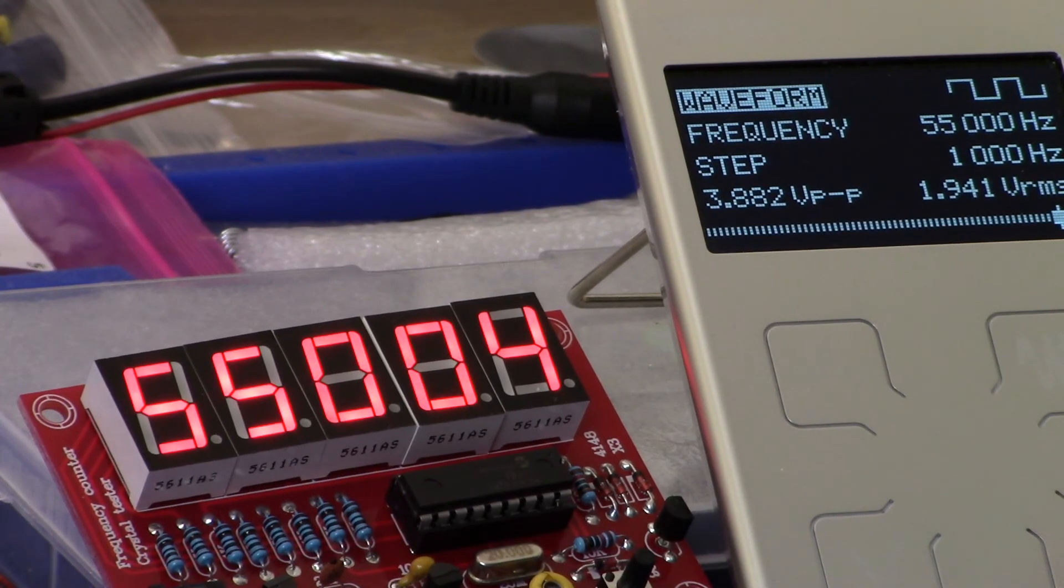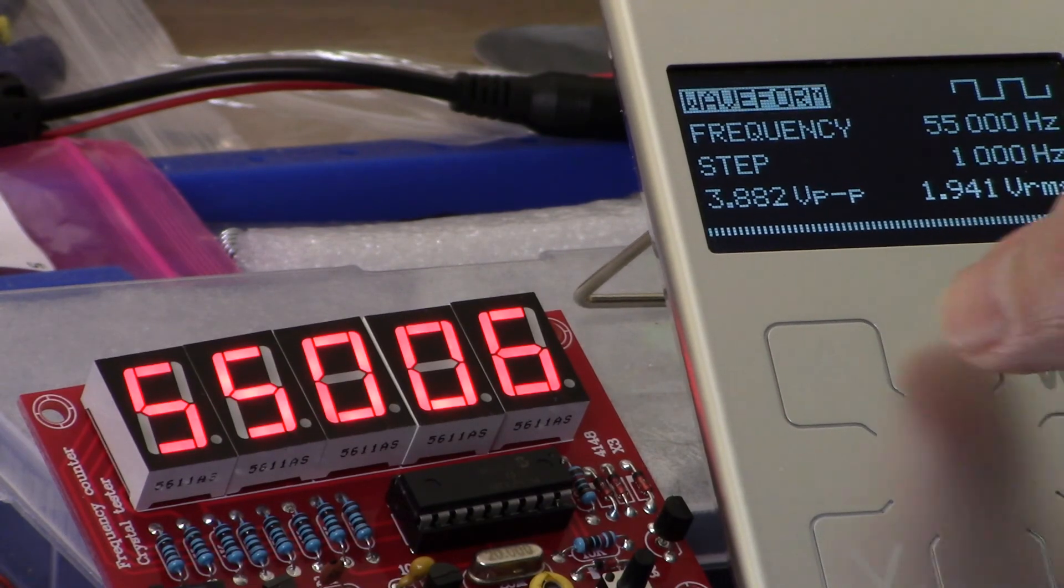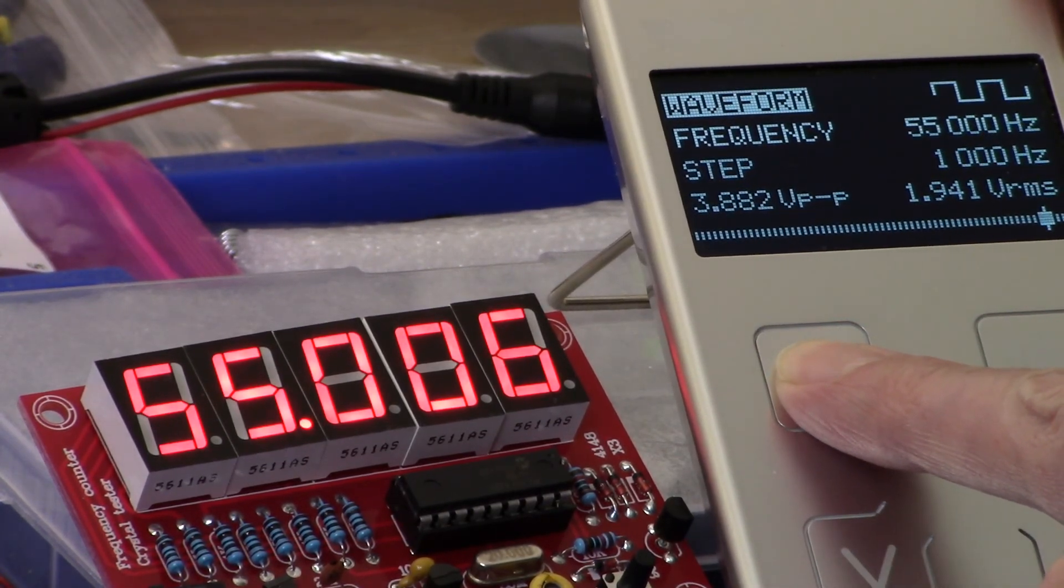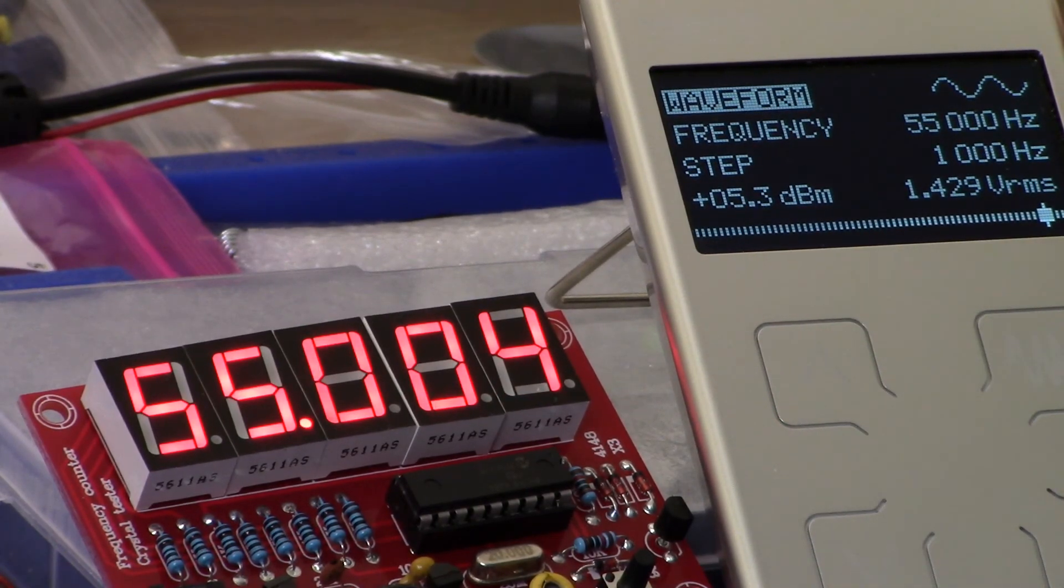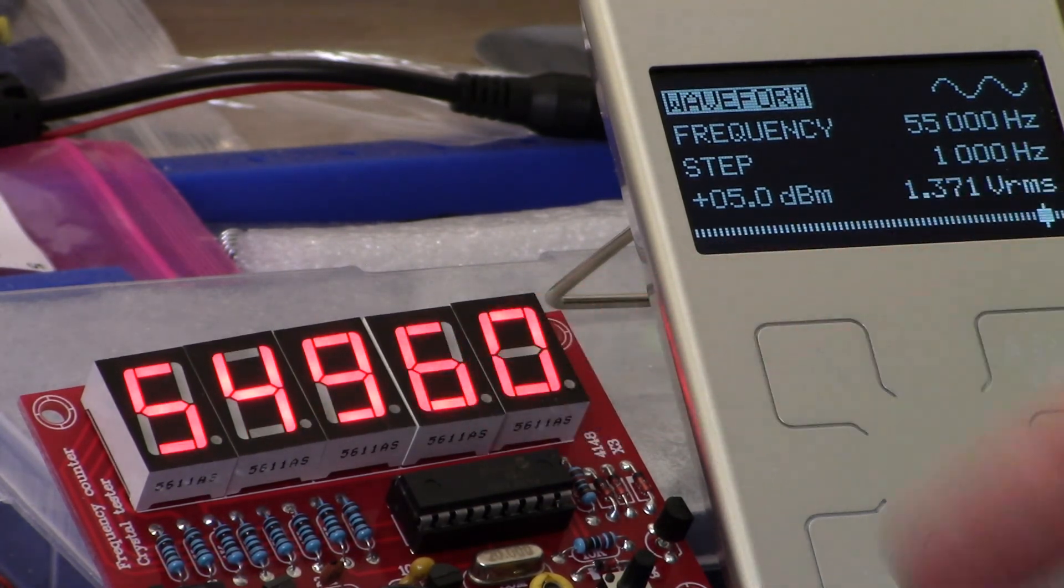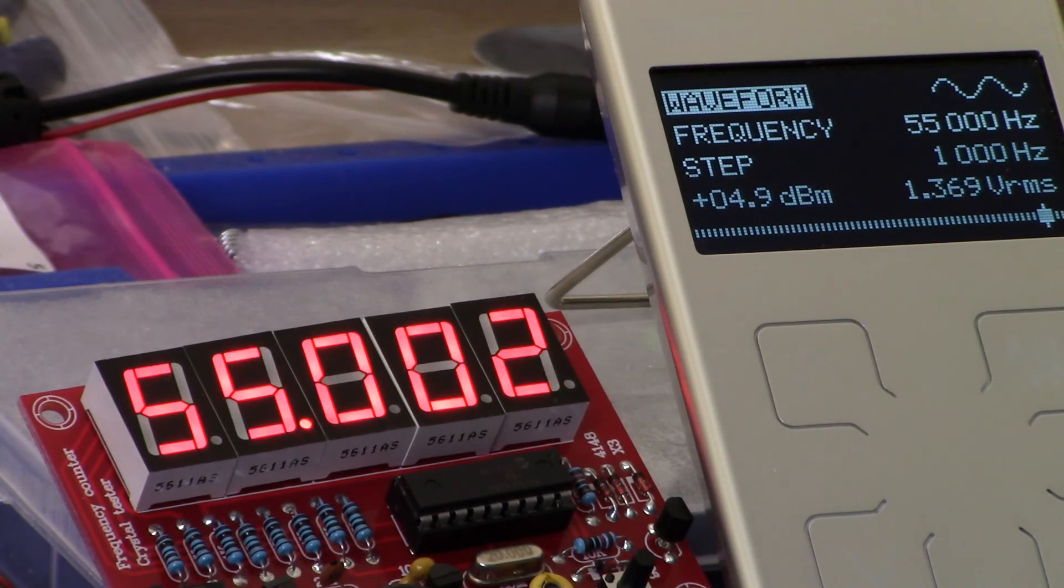I don't have any explanation for it. I've tried it several times, it's working. Change the waveform here to square wave. We're at 55 kilohertz. You can see it's tracking pretty well. I also have my oscilloscope on. It's not in shot for the camera, but that's also tracking at 55 kilohertz.